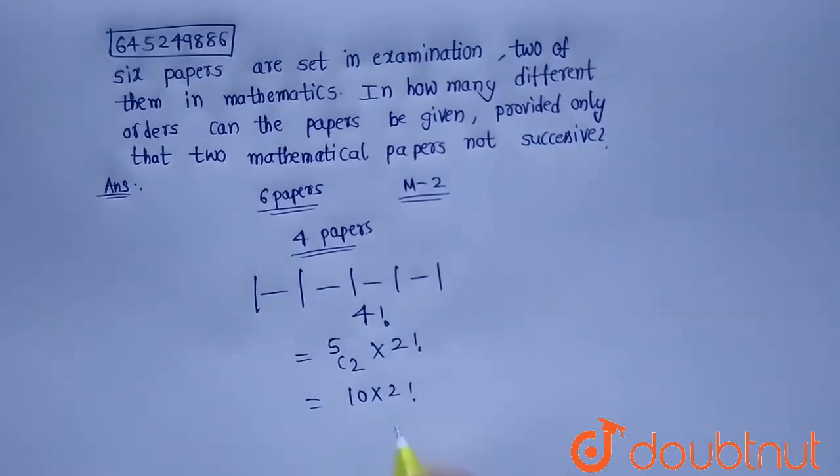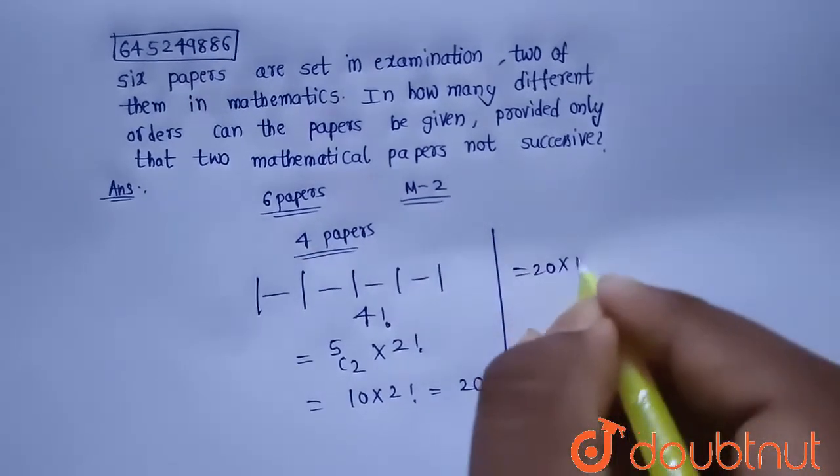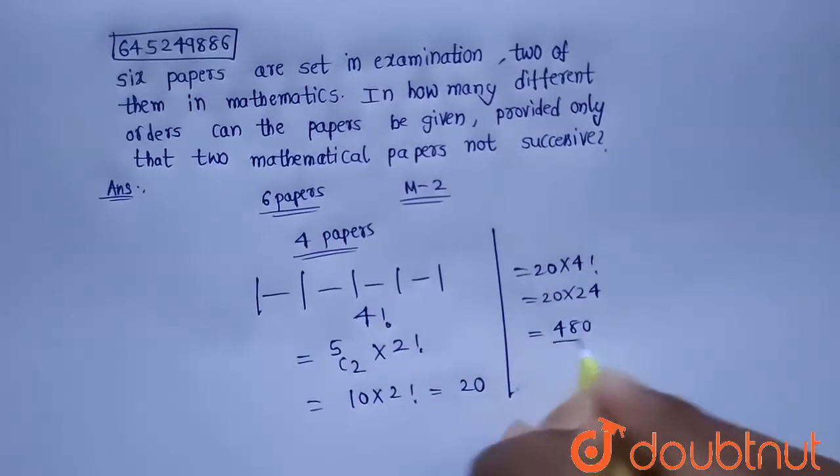So the number of orders will be 20 into 4 factorial, that is nothing but 20 into 24, which will be equals to 480. So the number of orders the papers can be given is 480.